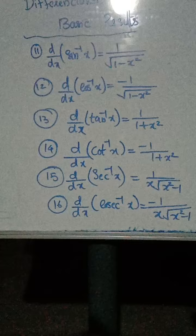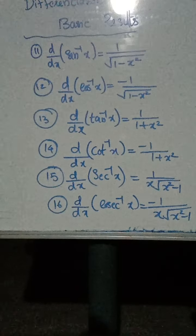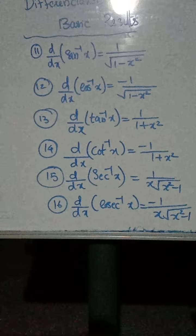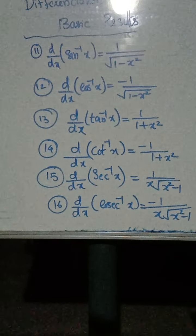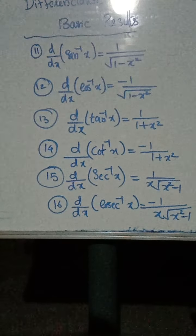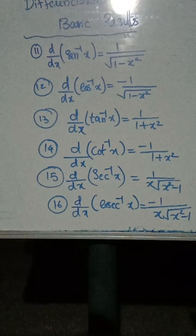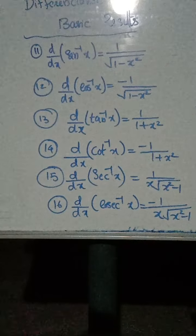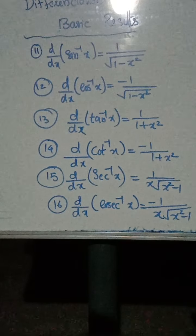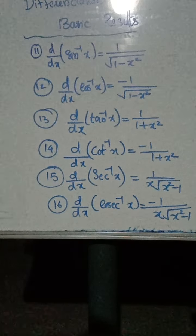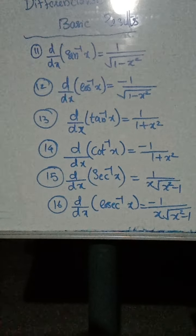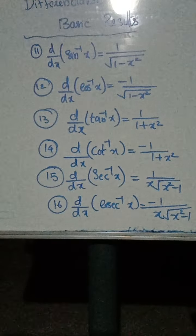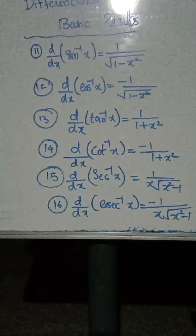The derivative of tan inverse x is 1 by 1 plus x square, and the derivative of cot inverse x is minus 1 by 1 plus x square. The derivative of sec inverse x is 1 by x root of x square minus 1, and the derivative of cosec inverse x is minus 1 by x into root of x square minus 1.